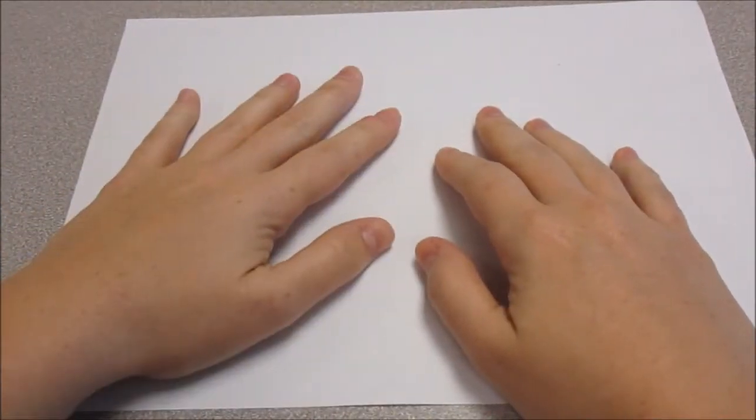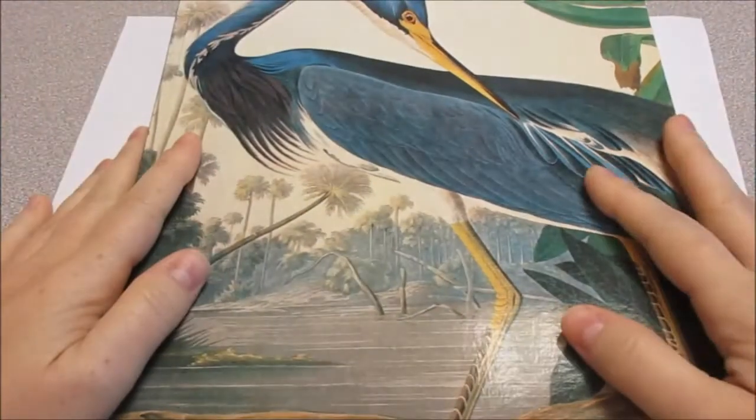There are lots of animals and plants that are native to the swamps. And so first, in my foreground, I want to kind of showcase an animal you might find there. And so I'm going to use a bird.